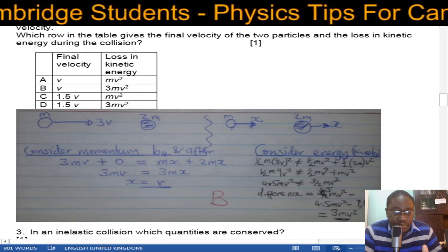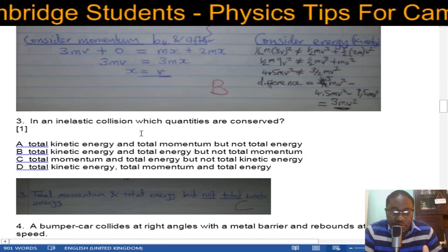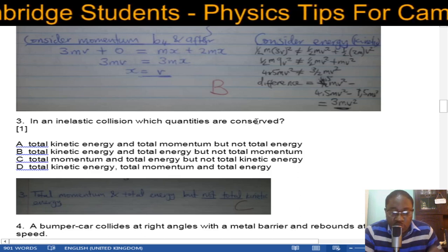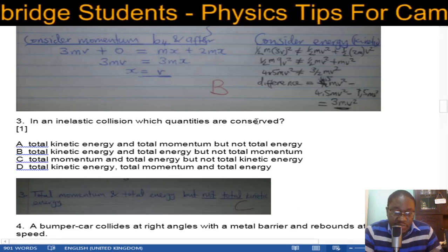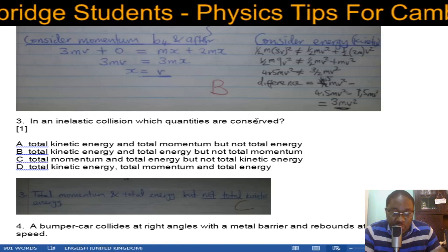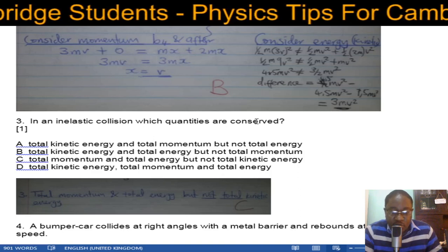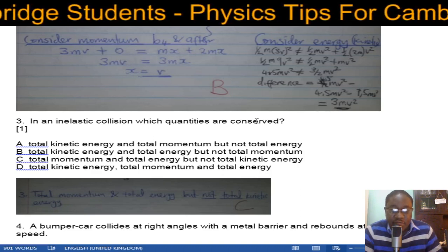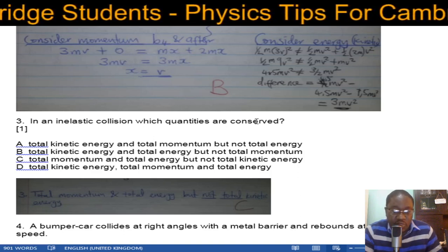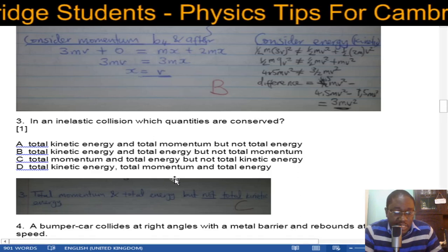Number three: in an inelastic collision, which quantities are conserved? You have to be very careful. Total momentum is always conserved. Total energy is always conserved — adding all relevant energies before the collision should balance those after. However, kinetic energy is not always conserved; it is only conserved in elastic collisions, not in inelastic ones. The correct answer is C.